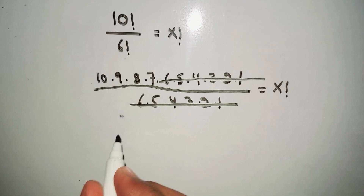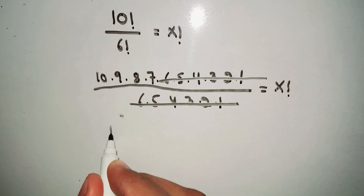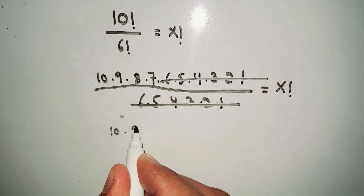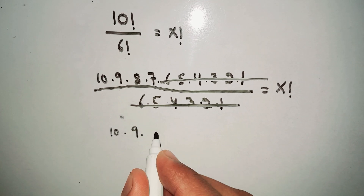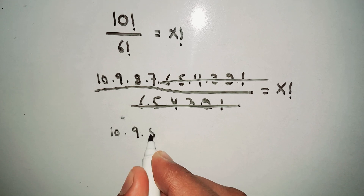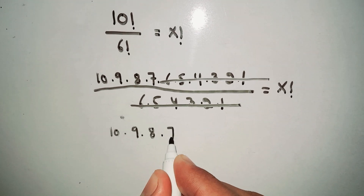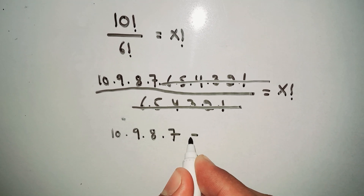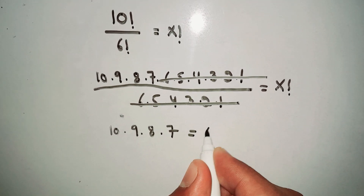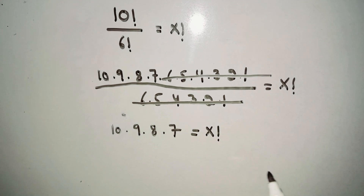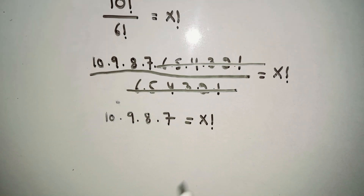Now the 6 factorial terms cancel out, so we are left with 10 × 9 × 8 × 7 equals X factorial.